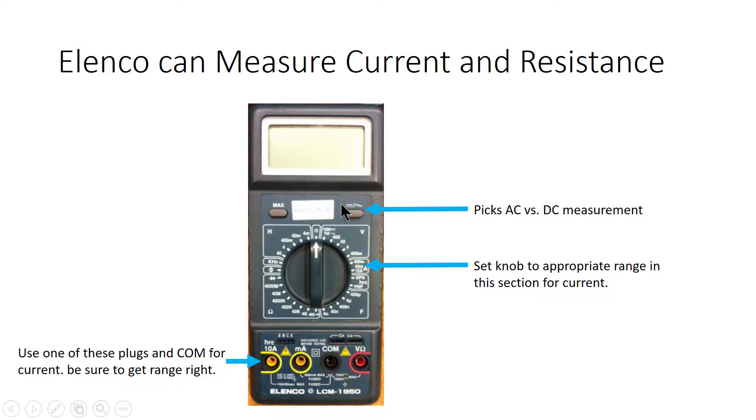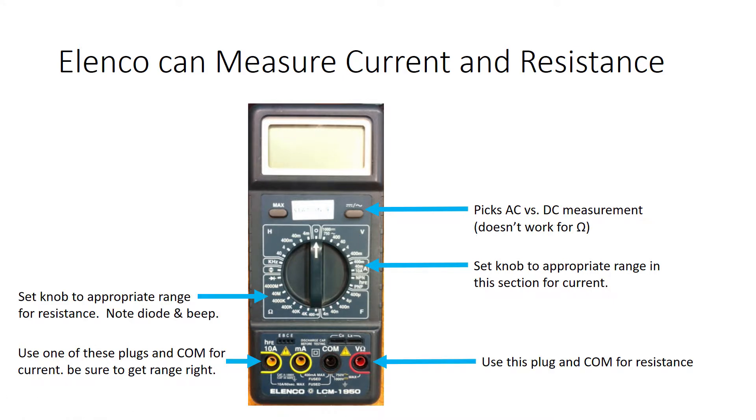Just like voltage measurements, you can use this button to pick whether you're taking an AC or a DC measurement, and you use this knob setting in order to pick what range of current you're trying to measure.